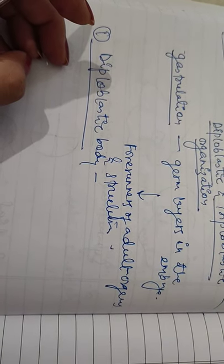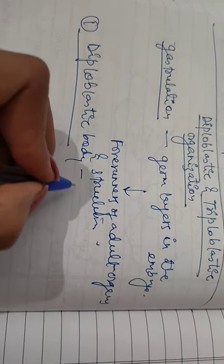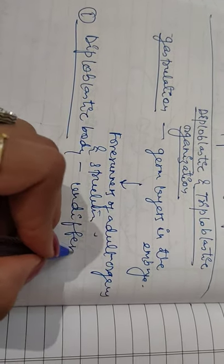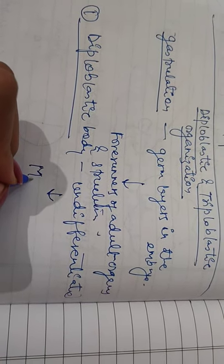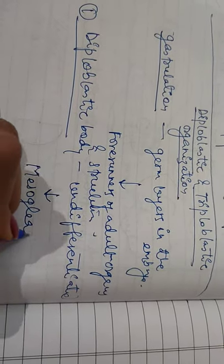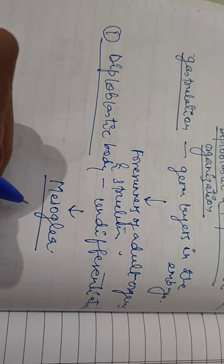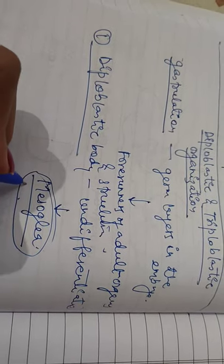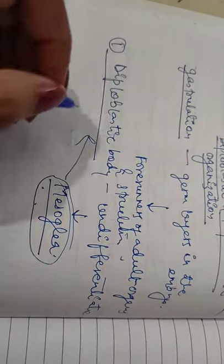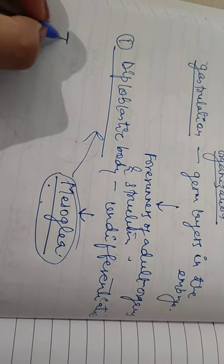The first type is diploblastic body. The embryos of porifera and cnidarians have two germinal layers: ectoderm and endoderm. There is also an undifferentiated layer called mesoglia — this is an important point to remember. Mesoglia is present in between the ectoderm and endoderm, and this type of body organization is called diploblastic.